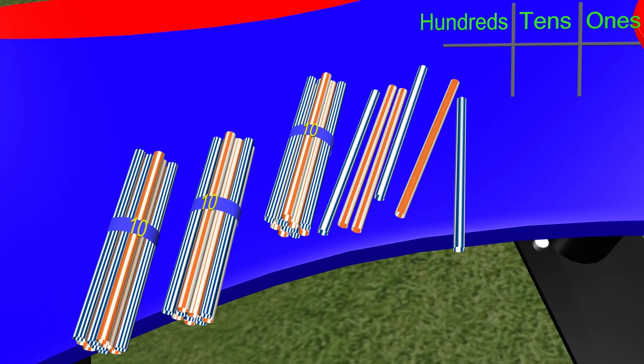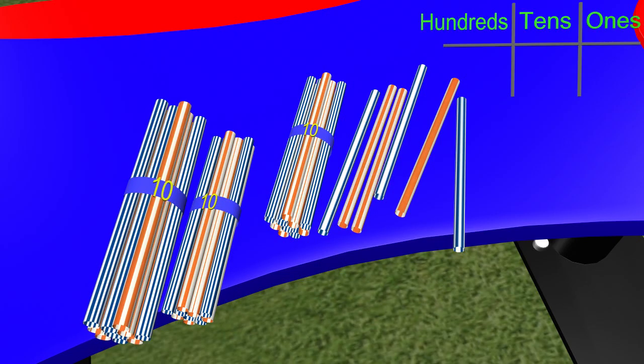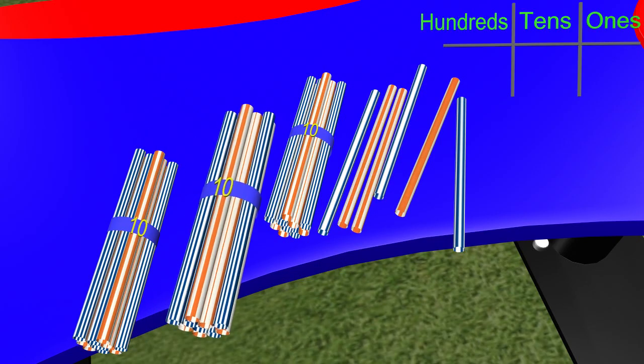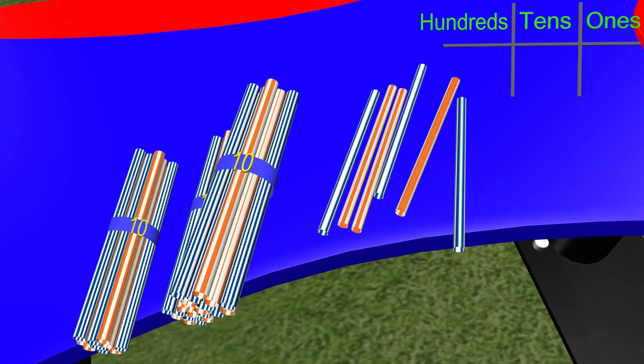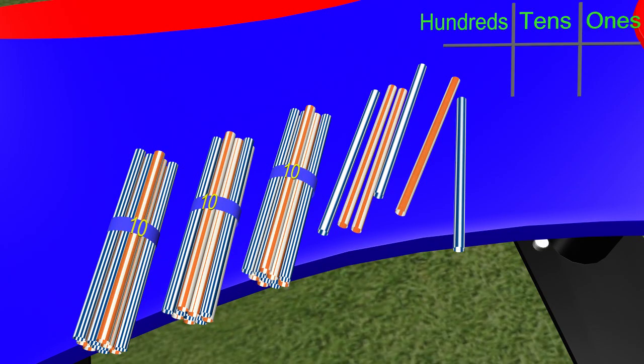We know that these three groups are in bundles of 10. That means we can count by 10s. We have 10, 20, 30. We have 30 straws, which is in the tens place.